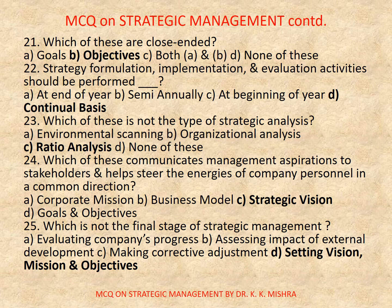Question 25: Which is not the final stage of strategic management? A, evaluating company's progress; B, assessing impact of external development; C, making corrective adjustments; D, setting vision, mission and objectives. Correct option is D: setting vision, mission and objectives.